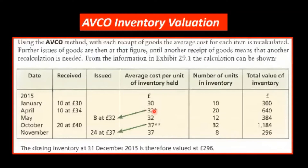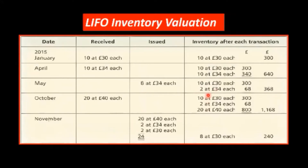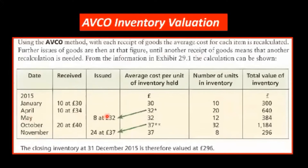Notice the average cost — you only need to have one line, not three or two or three or four lines like in the other method. In May, we issue some. We are going to issue at that average cost, so it's going to be 8 at the average cost of 32. You take 8 by 32, minus from the 640, we get 384. Or another way: from the 20, we minus 8 and get 12. The average cost of 32 carries through — 12 by 32 is 384.